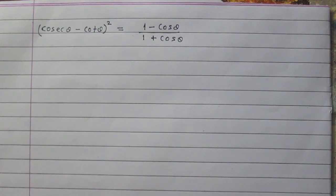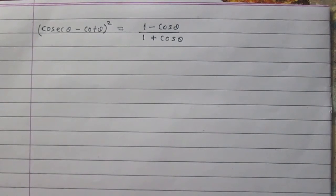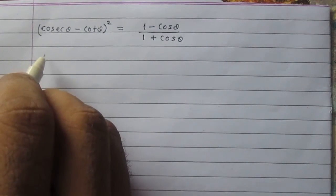Cosec theta minus cot theta whole square is equal to 1 minus cos theta upon 1 plus cos theta. Let us consider the left hand side of this identity.